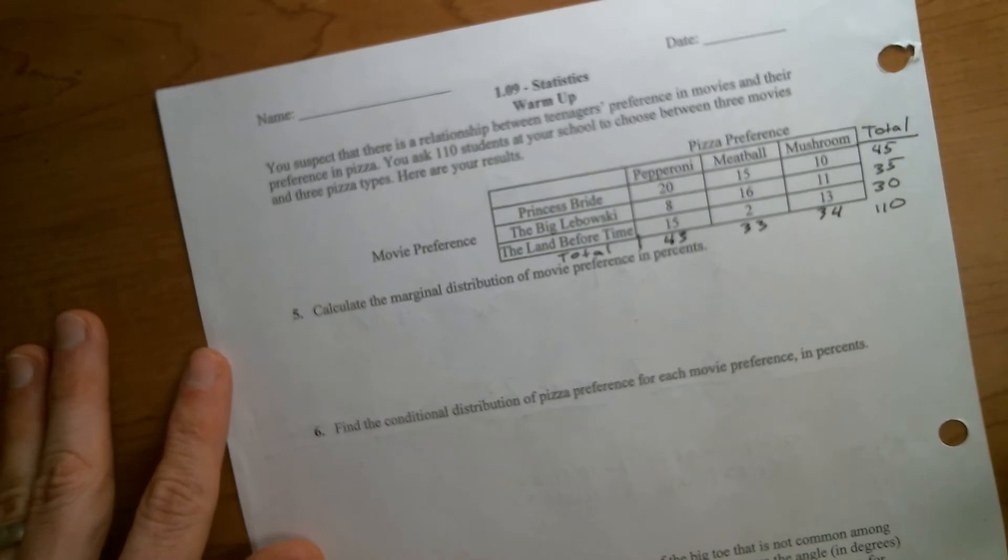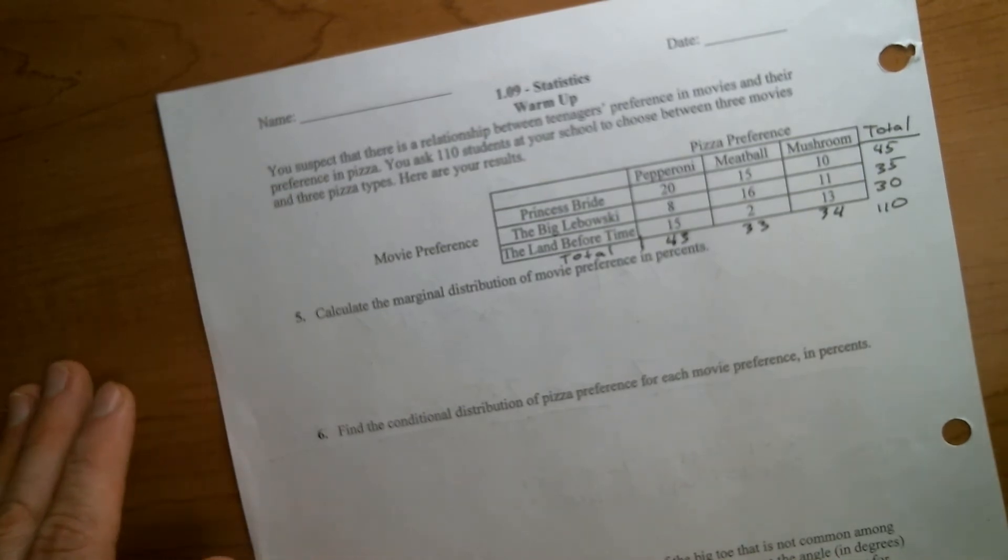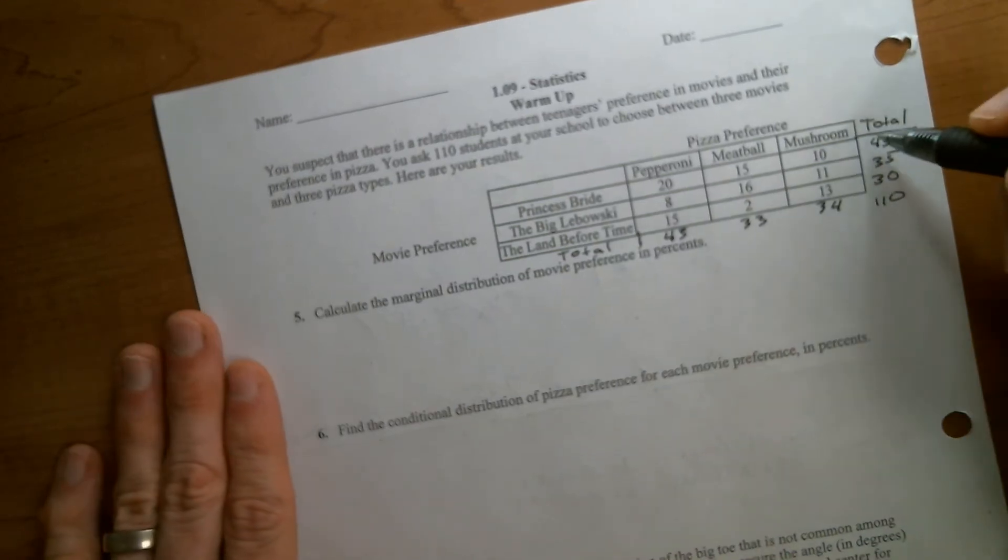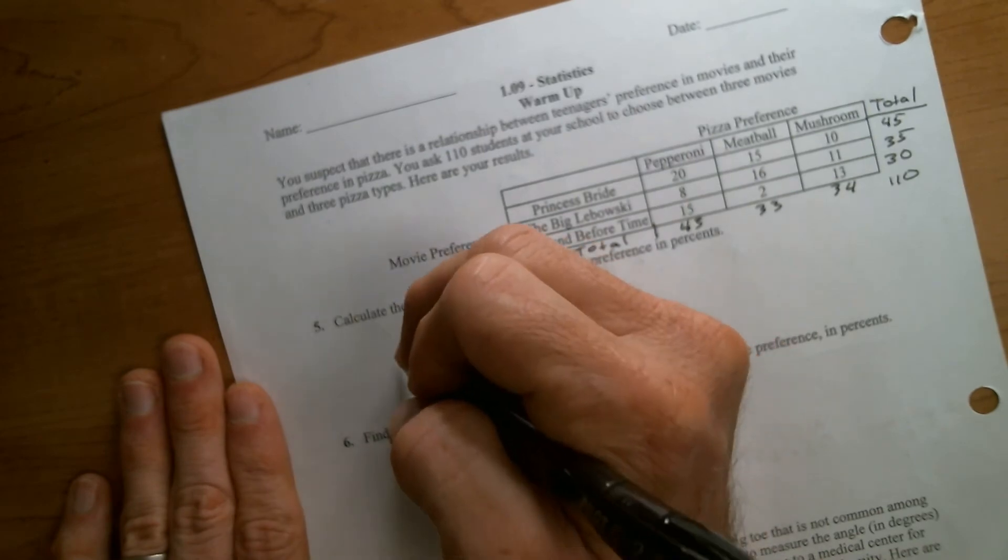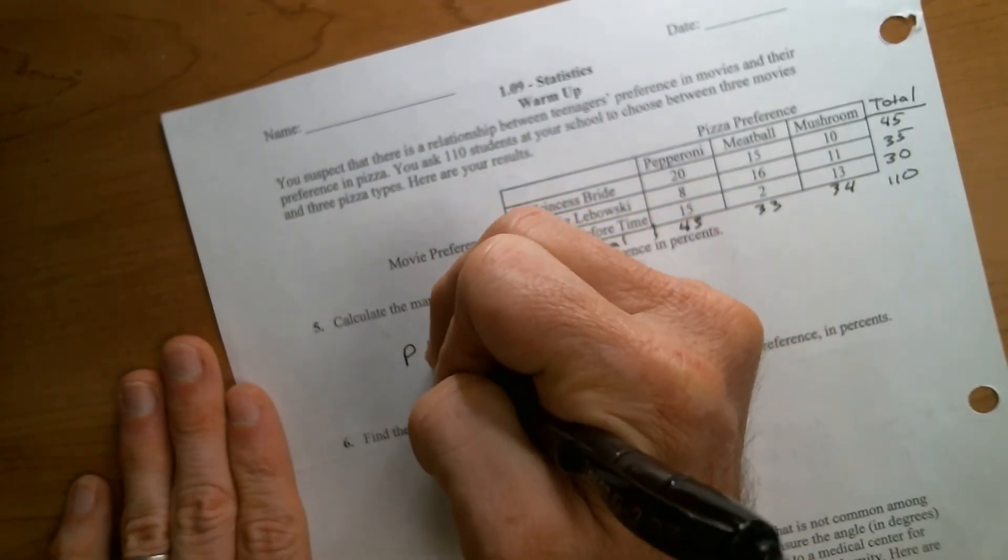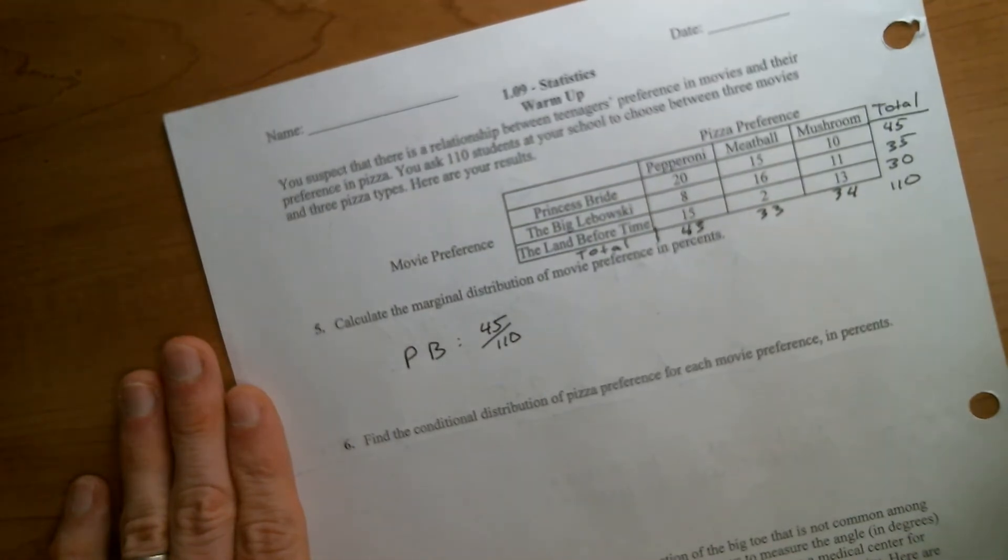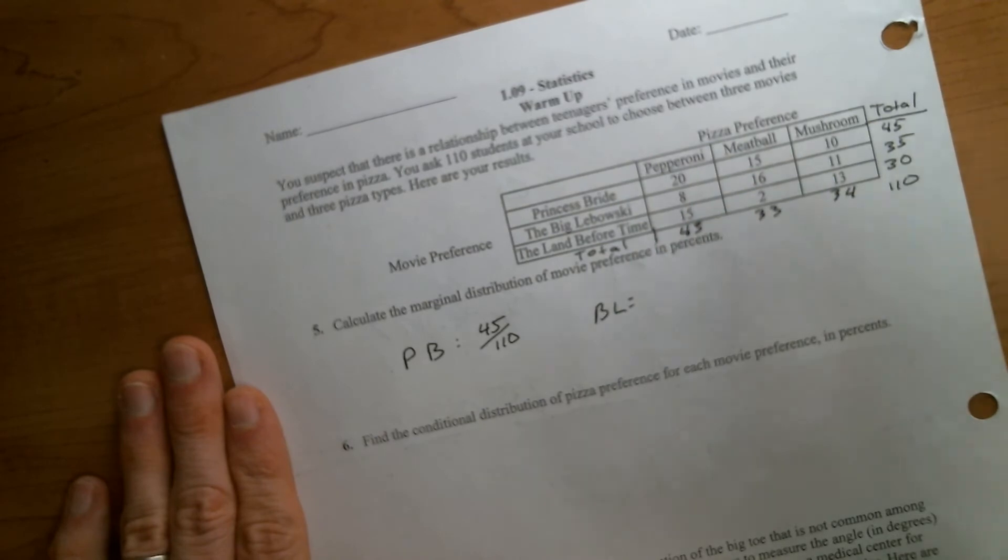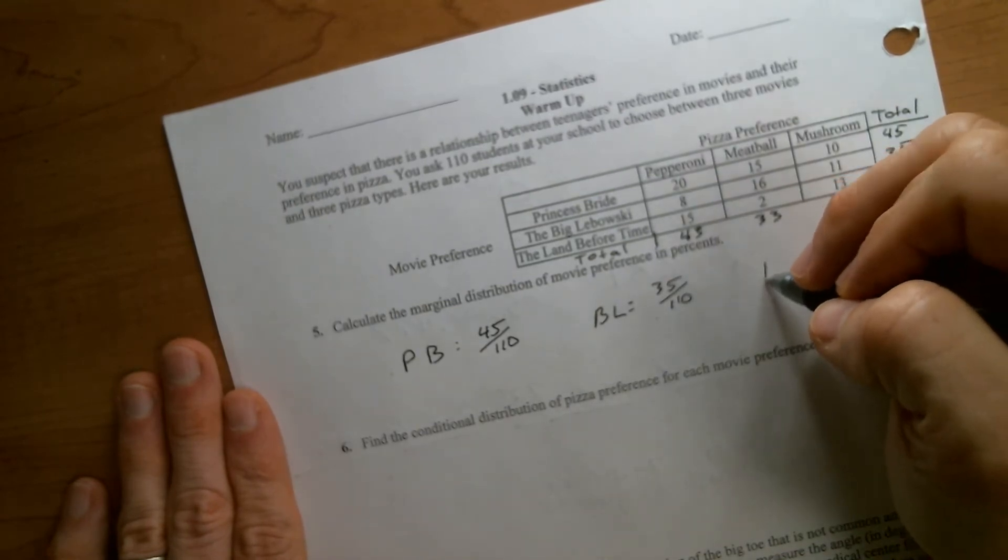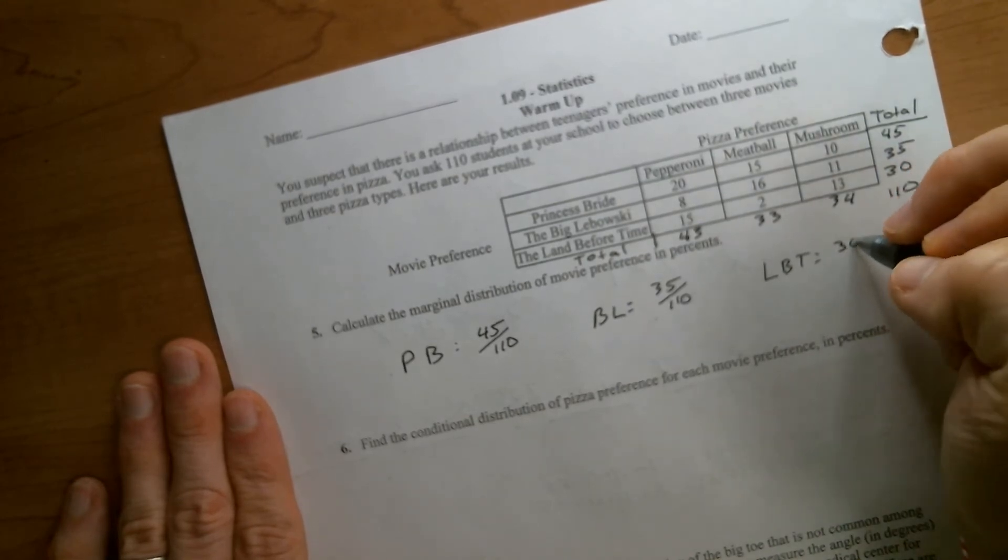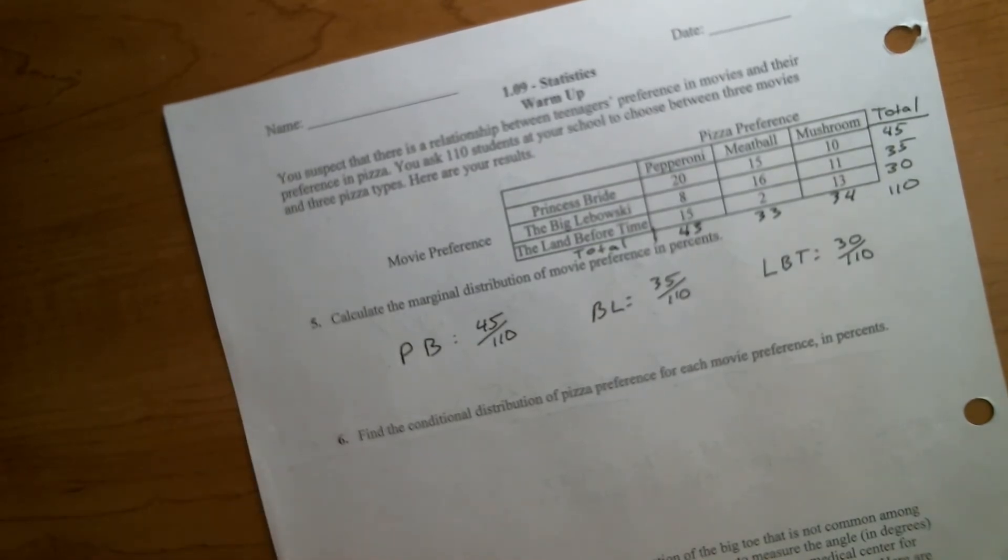Now, marginal distribution of movie preference means we're dealing with percentages for just the movie preferences and we're basically pretending like pizza wasn't even a question. We're using these numbers at the margins. Marginal distribution, we use the numbers at the margins. So we're basically calculating a percentage for Princess Bride. A marginal distribution is always out of the table total.